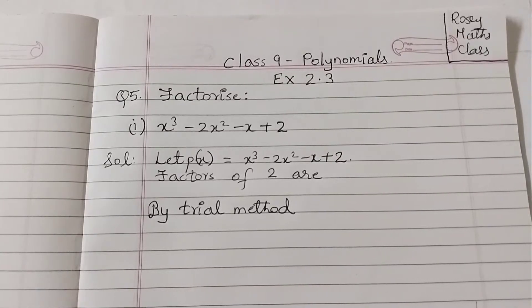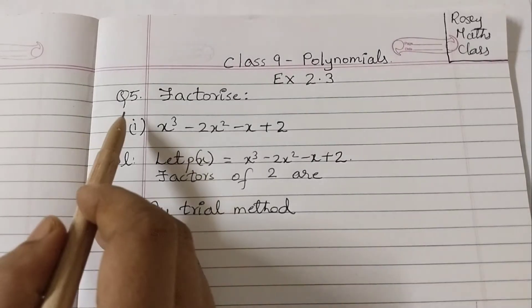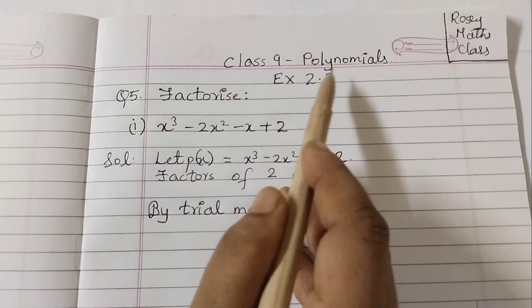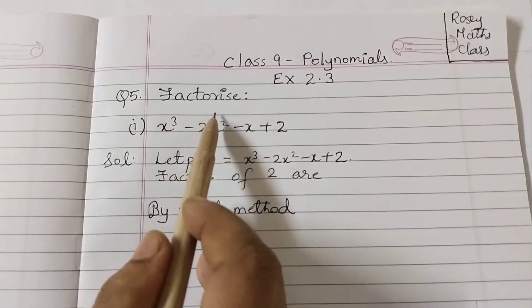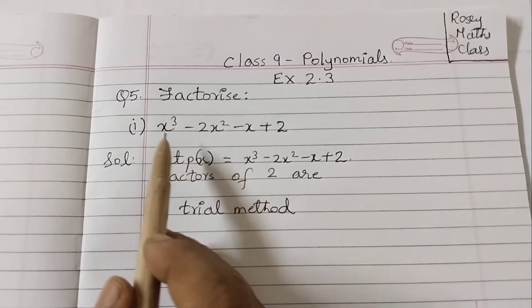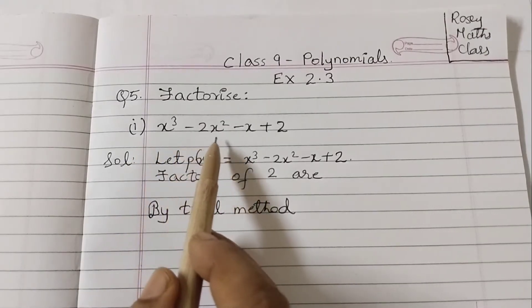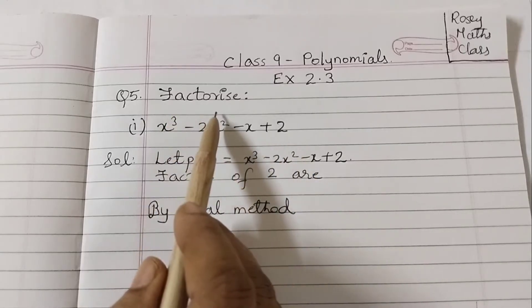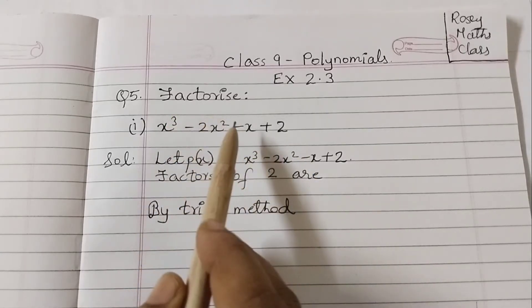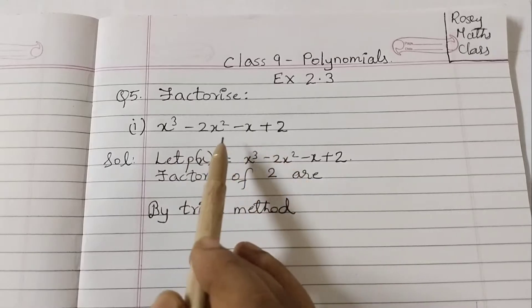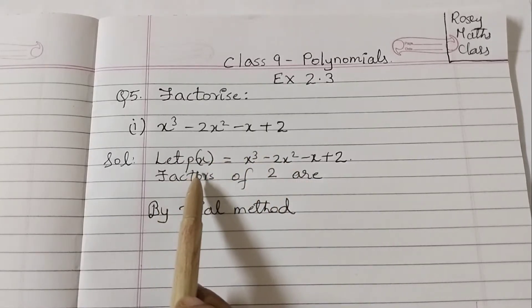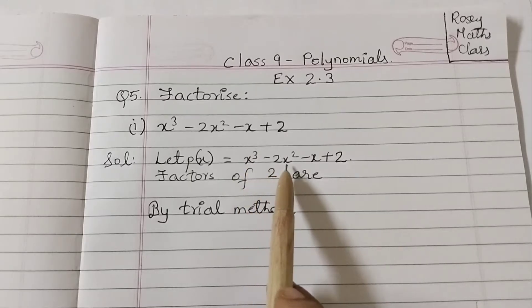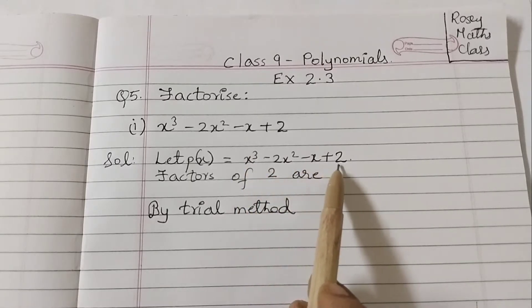Hello students. In this video we shall discuss question number 5 of exercise 2.3, chapter 2 polynomials. Factorize — this is the first question: x cubed minus 2 x squared minus x plus 2. Factorize means to find out the factors of the given polynomial. Let p of x equals x cubed minus 2 x squared minus x plus 2.